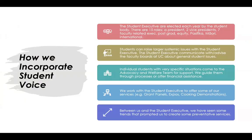So how we incorporate student voice at UCSA: the 15 student executive members are elected by the student body each year. Students can nominate themselves for a position, but it's up to the student population to choose who they think is best. The 15 roles are made up of a president, two vice presidents, seven faculty-related executives, and then targeted roles for postgrads, equity and diversity, Pacifica, Māori, and international students.